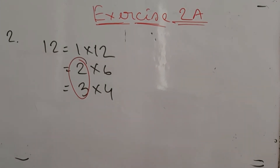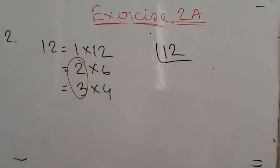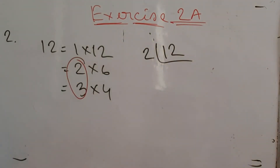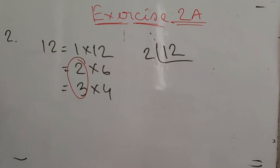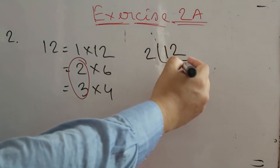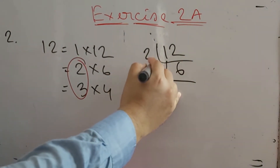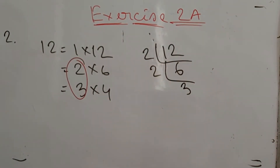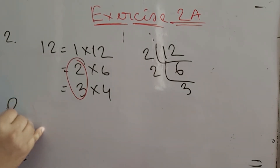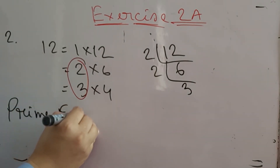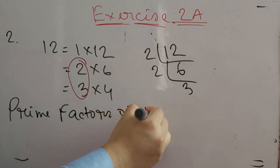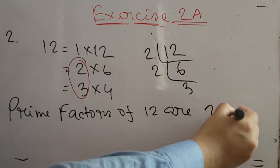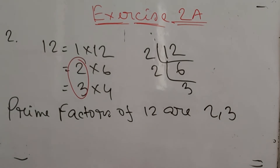You can also solve this by the division method. Since 12 is an even number, divide by 2: 12 ÷ 2 = 6. Divide 6 by 2 again: 6 ÷ 2 = 3. You can see there are only two prime factors, 2 and 3. So the prime factors of 12 are 2 and 3.